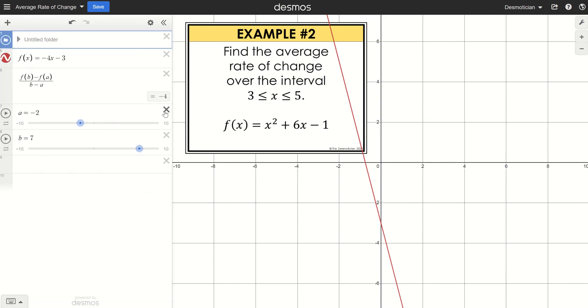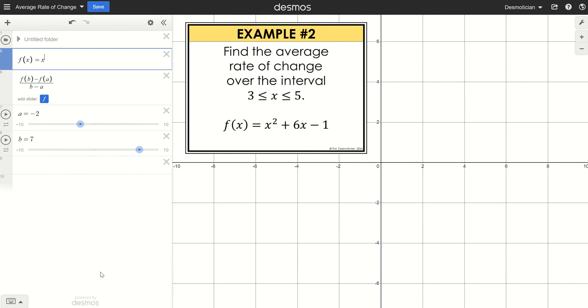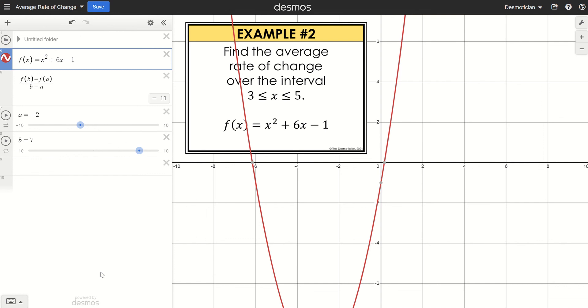Alright, so I'm going to change just this part right here to the quadratic function x² + 6x - 1. Now, although this is not a linear function, we're still using that same formula for average rate of change. We don't have slope of a quadratic function because it's not a straight line, but we can find the average rate of change between two points.